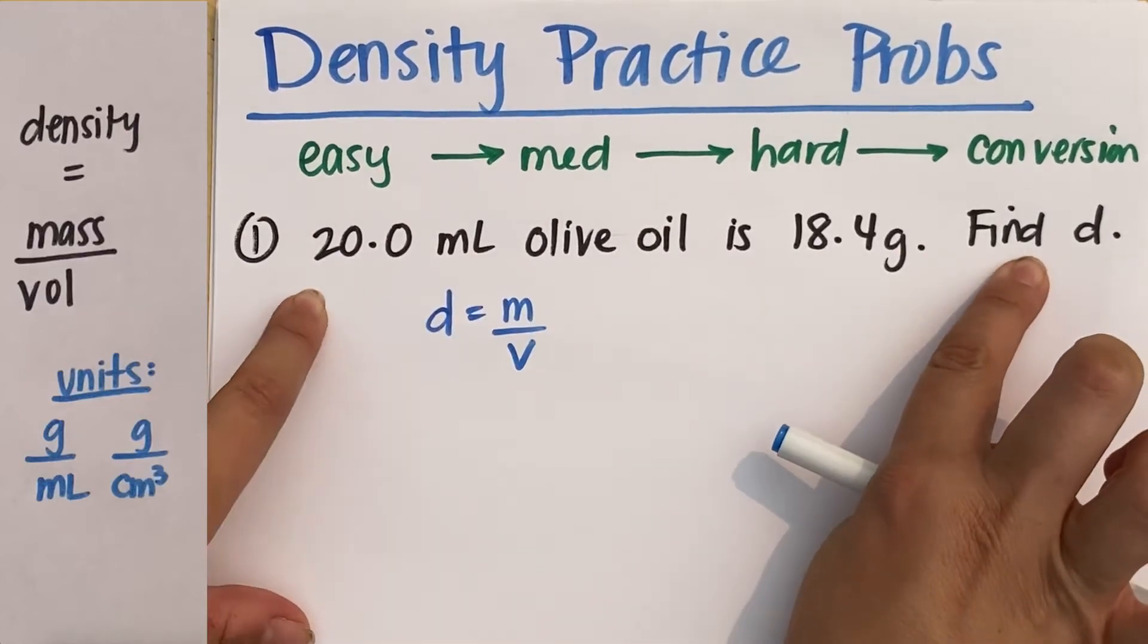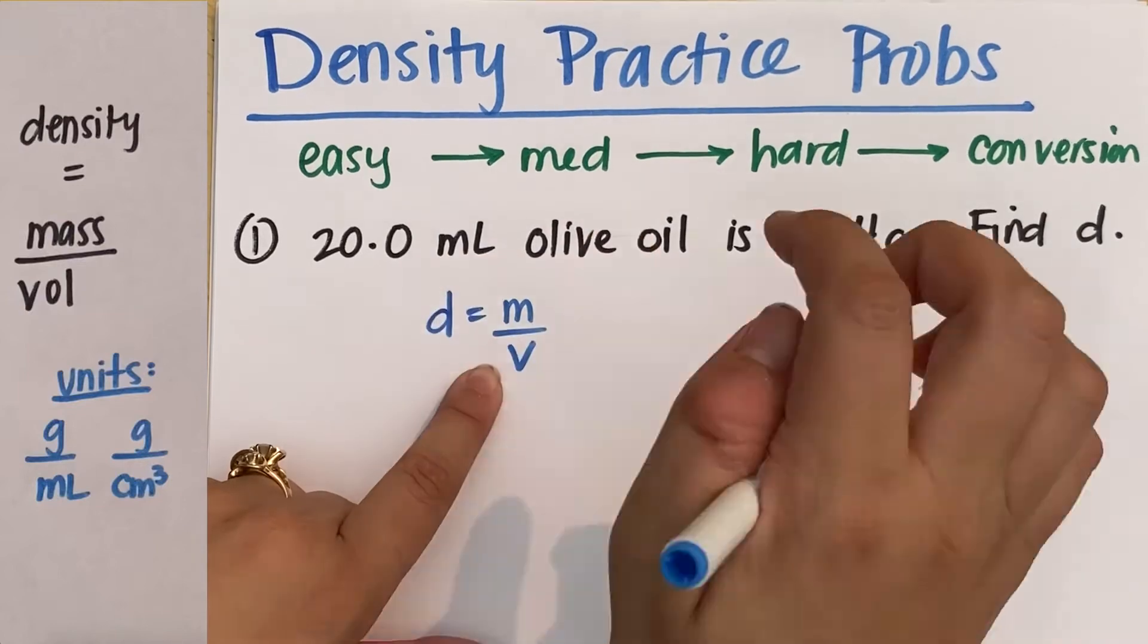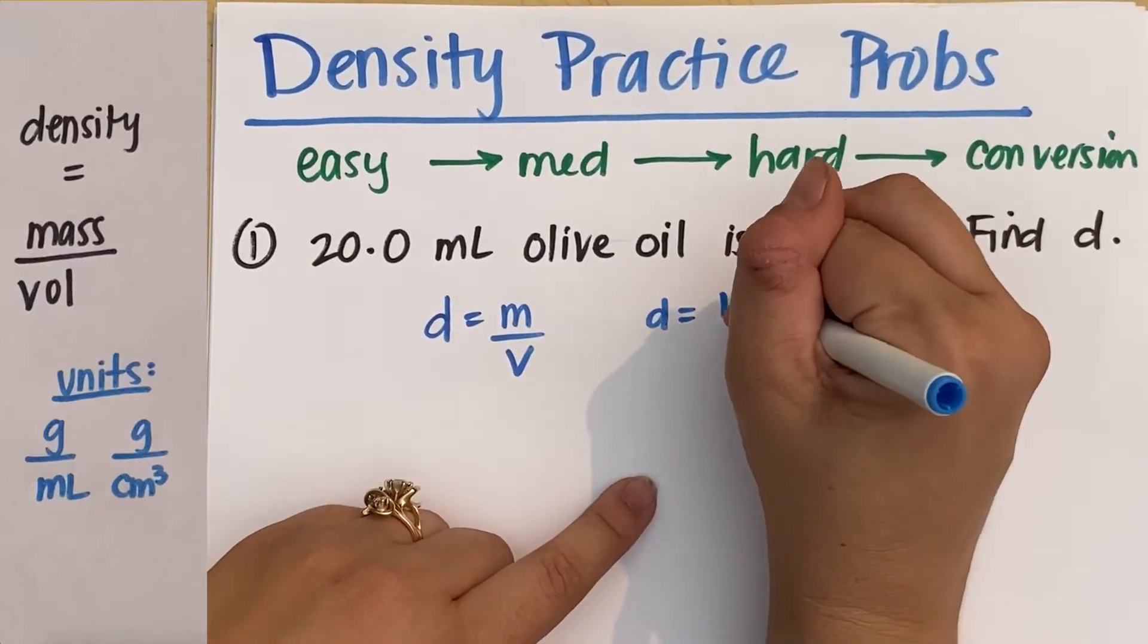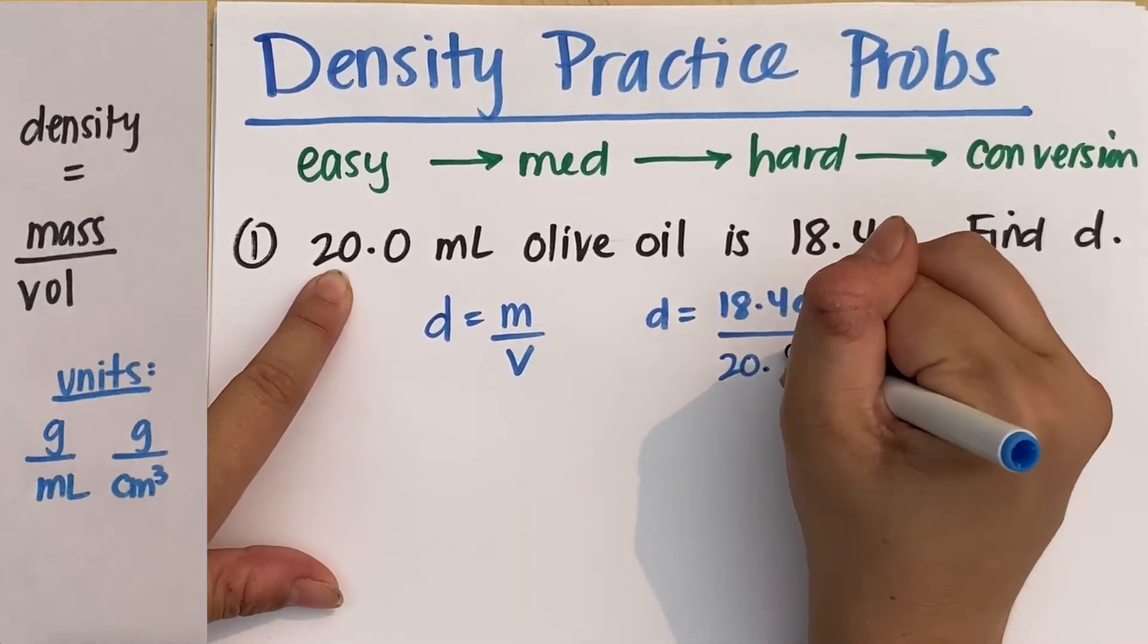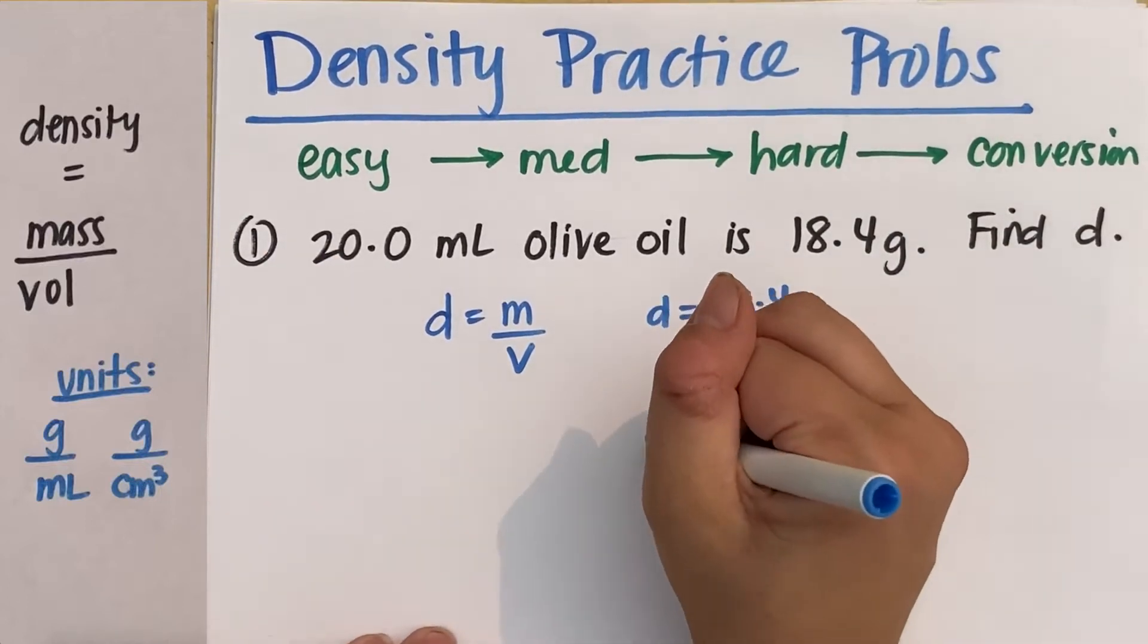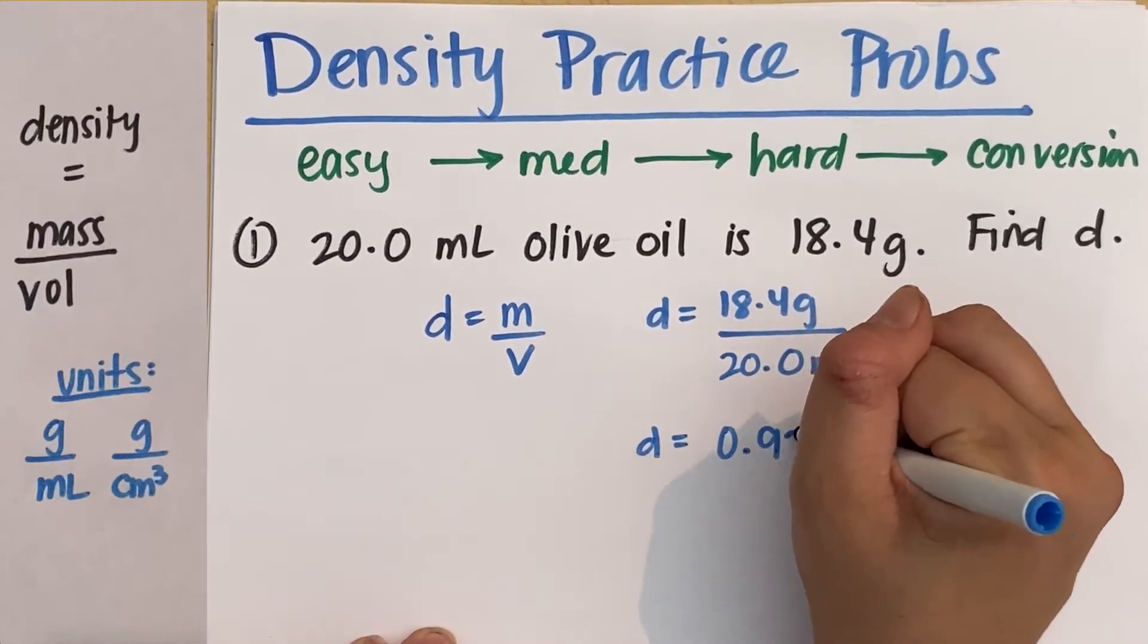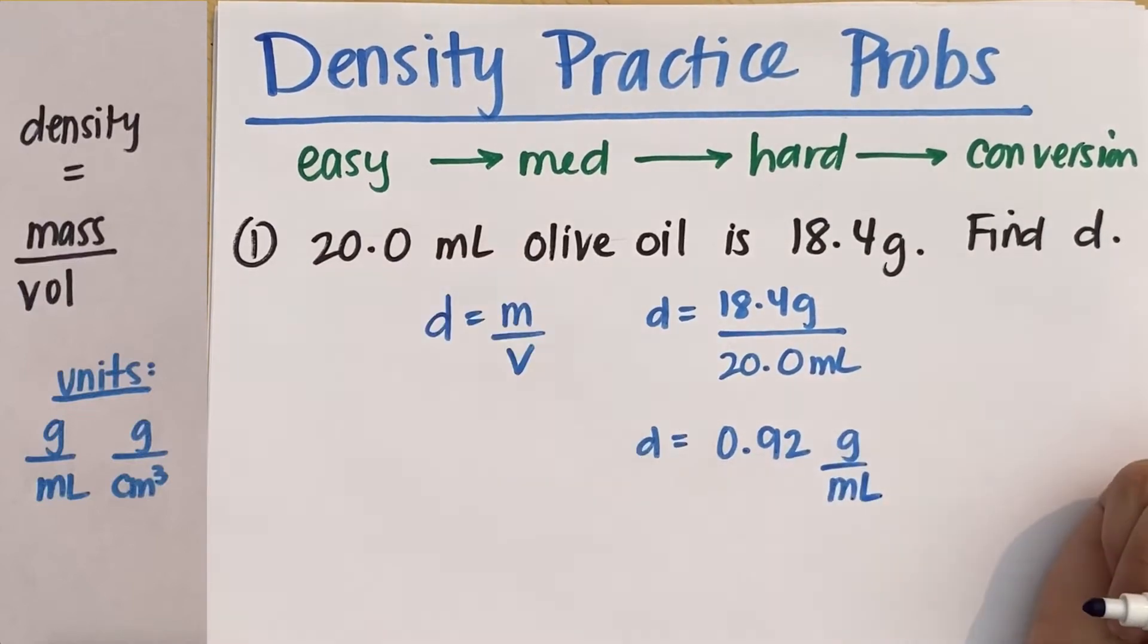This is definitely the easiest type of density problem you could do because you're given the mass and you're given the volume. So you know density equals my mass, 18.4 grams, divided by 20.0 milliliters. Then you beep, boop, beep into your calculator, and it tells you density is 0.92 grams per mil.